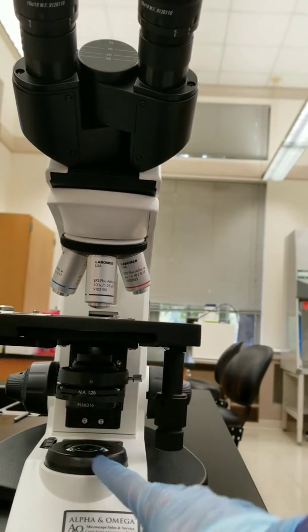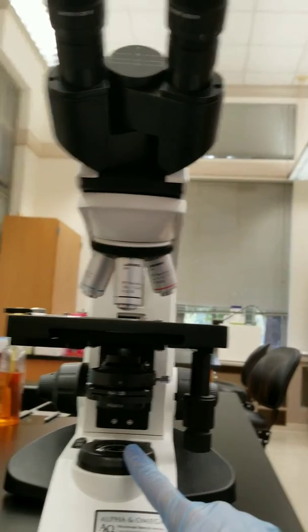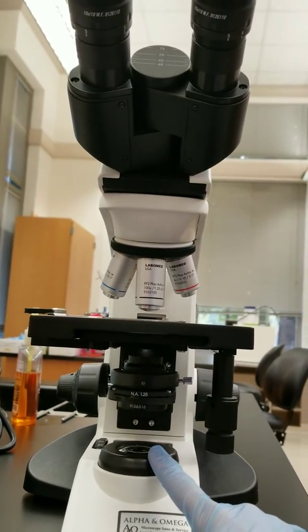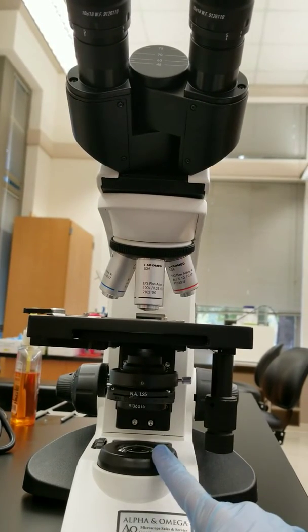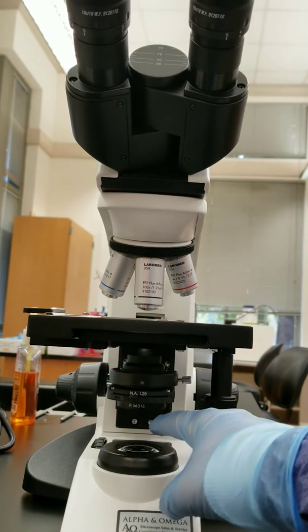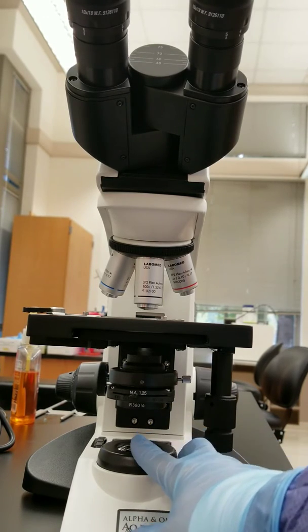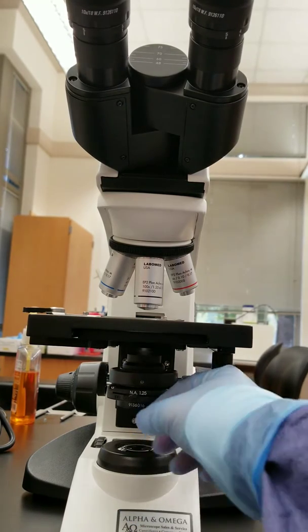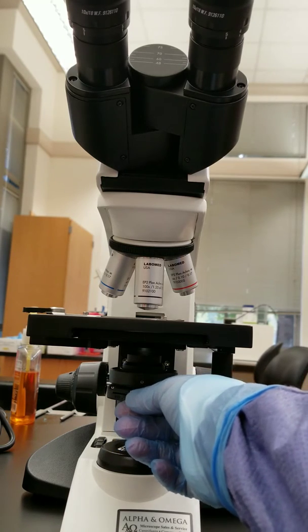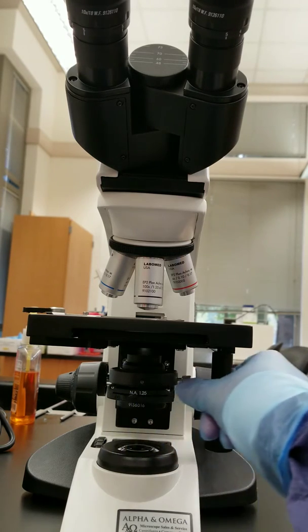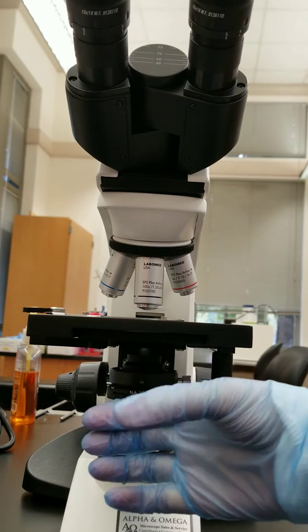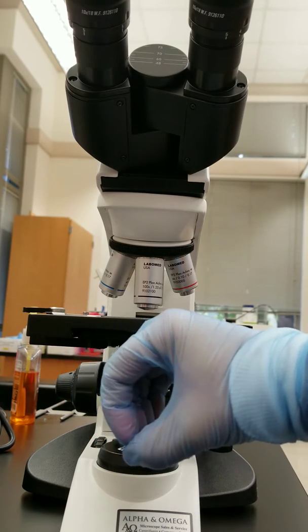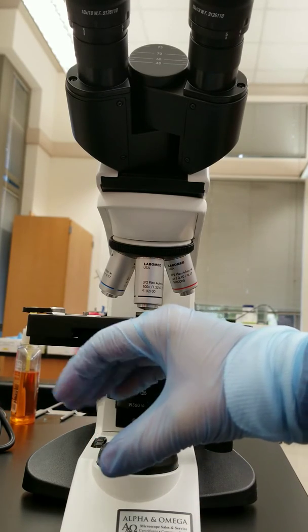We have the light source down here, also called the lamp. When we turn this on, the light will come up through here. This is a diaphragm, and if you open and close it, it opens and closes a circle that allows light to go through.